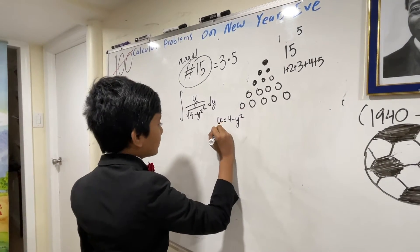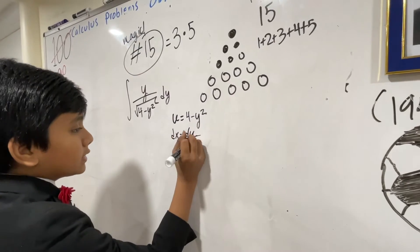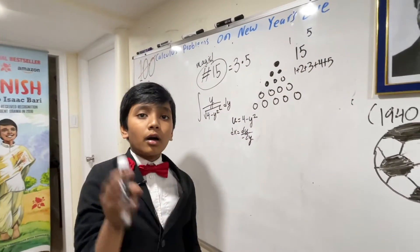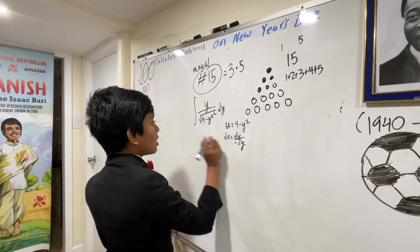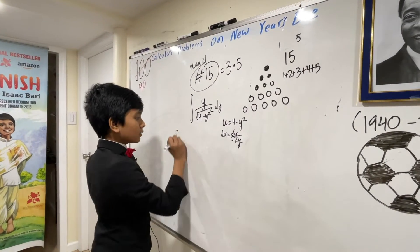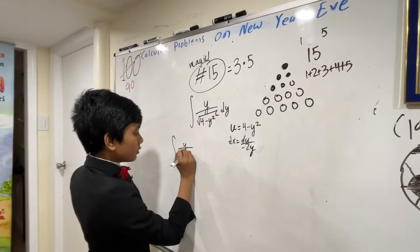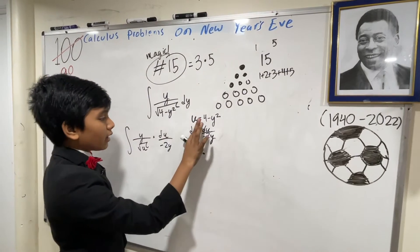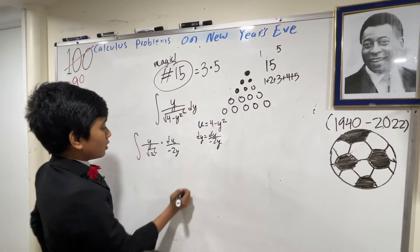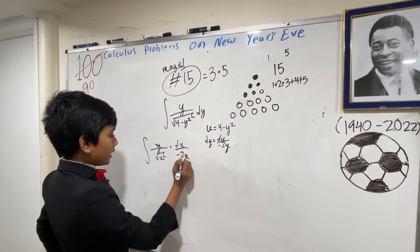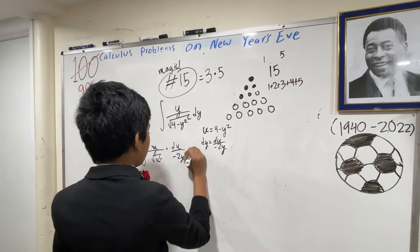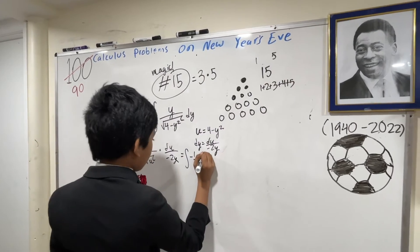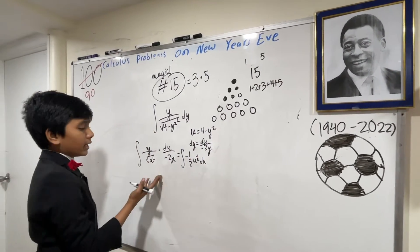Thus dy equals du over negative 2y — check out our video on problem number five if you want to learn how that works. So this becomes the integral of y over the square root of u, times du over negative 2y. The y's cancel out, leaving us with negative one half times u to the negative one half, du.